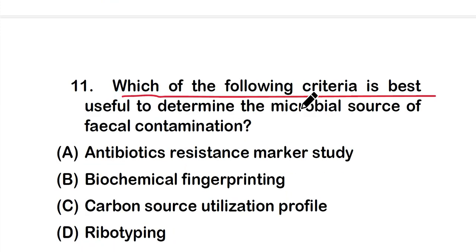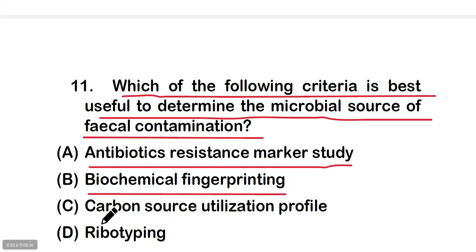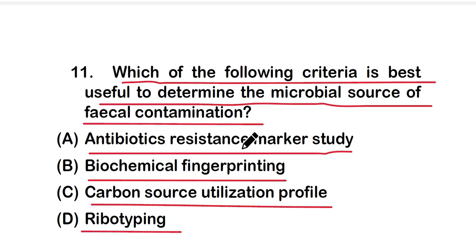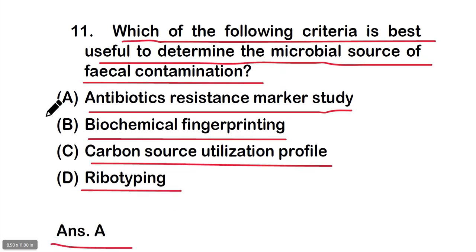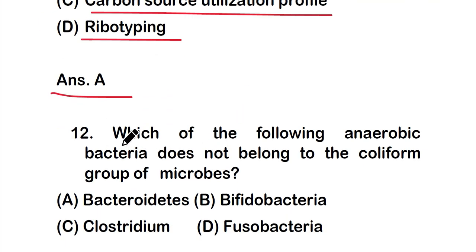Question eleven: which of the following criteria is best useful to determine the microbial source of fecal contamination? Options: antibiotic resistance marker study, biochemical fingerprinting, carbon source utilization profile, or ribotyping. The right answer is option A — antibiotic resistance marker study is best useful to determine the microbial source of fecal contamination.